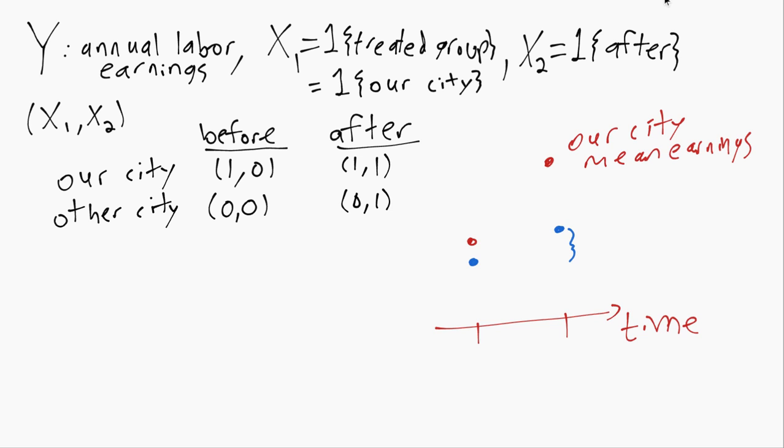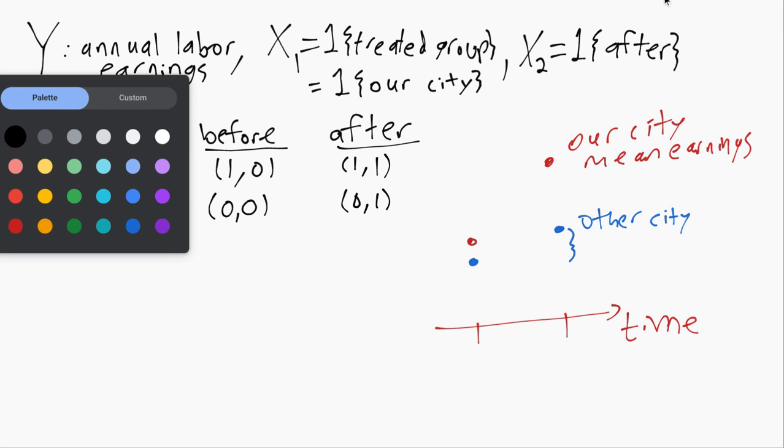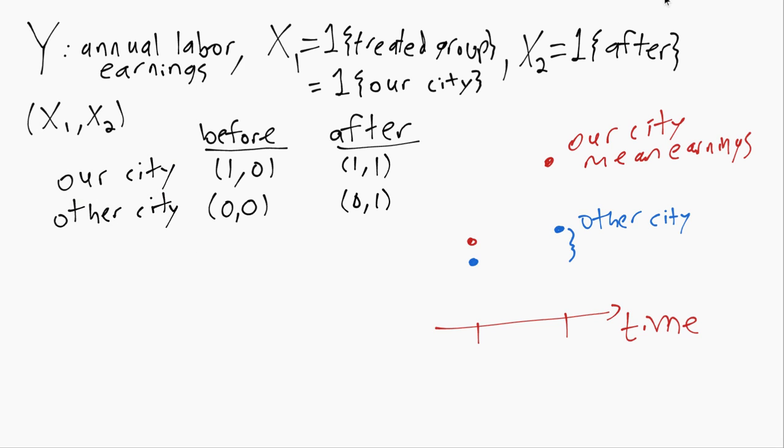So this change here in the blue, this is the other city. It's assuming that our city would have followed a parallel trend, that's called the parallel trends assumption, and ended up over here.